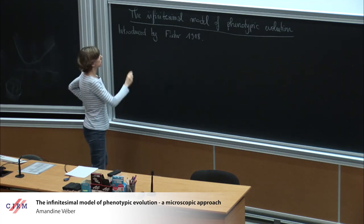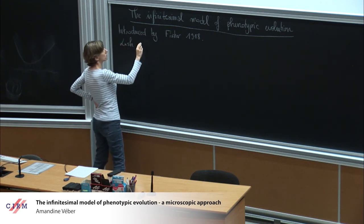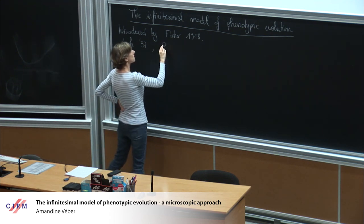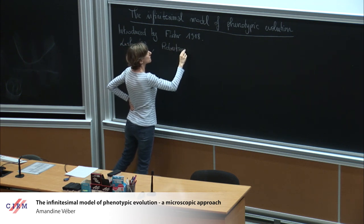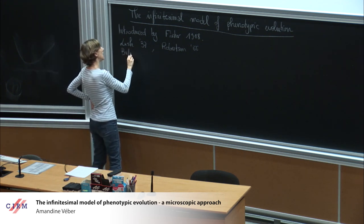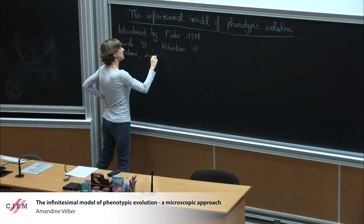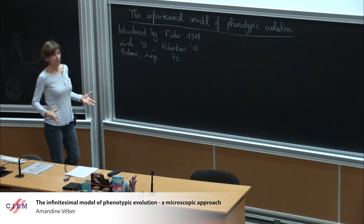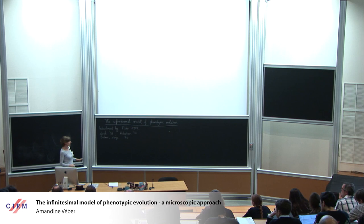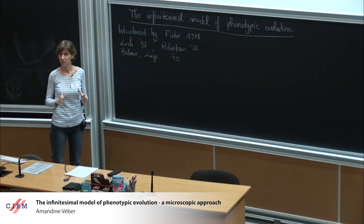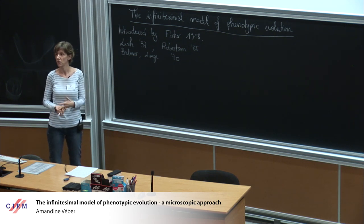It has appeared in the literature, starting with people using it without actually saying they were using it: Lush in 1937, who spoke about the Breeders equation; Robertson in 1966; and later Bulmer and Lange. These are the big names using the infinitesimal model one way or another in the 70s. But there is no clear formulation of what the model is, and to my knowledge no clear formulation of the conditions under which it holds — that was the purpose of our work, to clarify the definition and the conditions under which you can use this infinitesimal model.